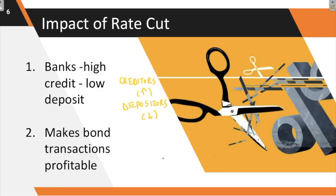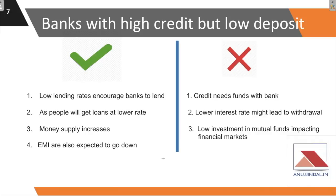At the macroeconomic level, one impact is on banks. Lower lending rates encourage banks to lend more by offering money at a lower rate. Since the repo rate is reduced, banks can provide money to the public at a lower rate, increasing loan uptake and money circulation in the market. Additionally, people who have already taken loans are expected to pay lower EMIs, which is positive news for borrowers.